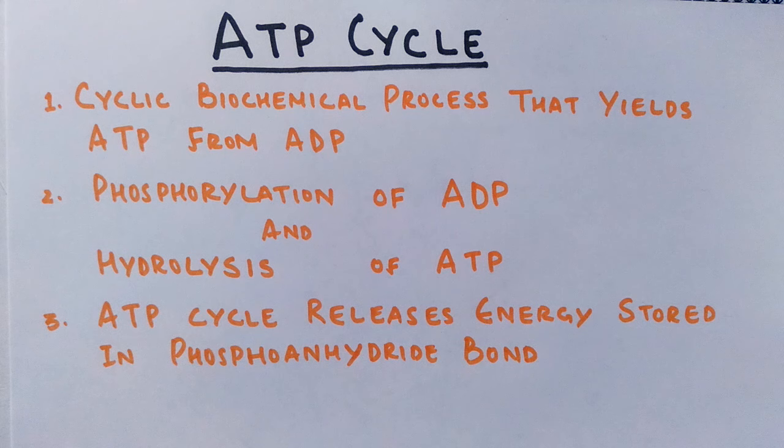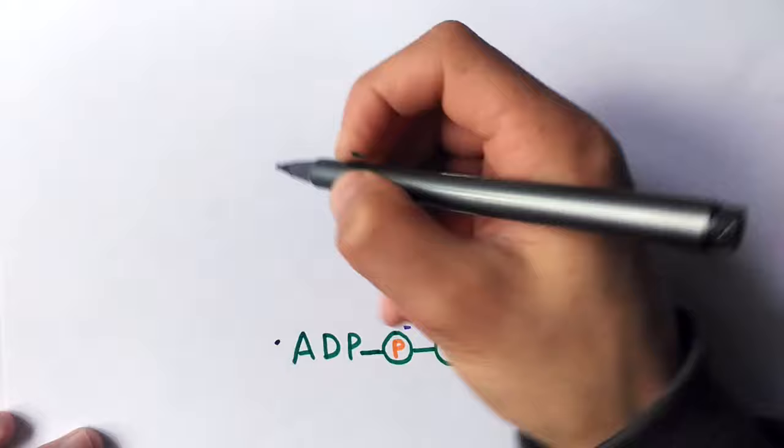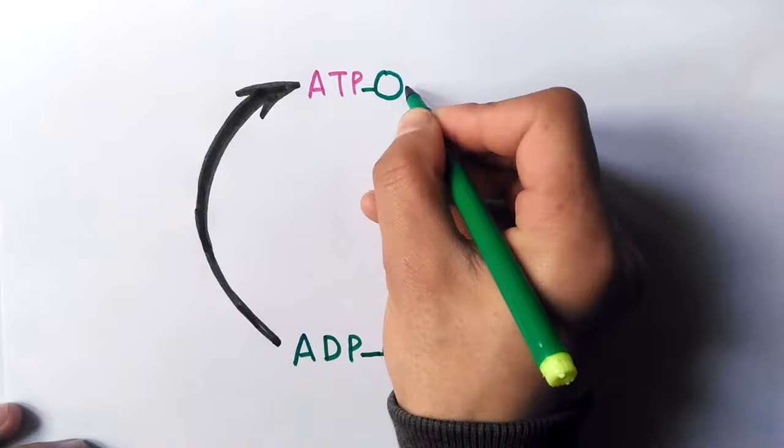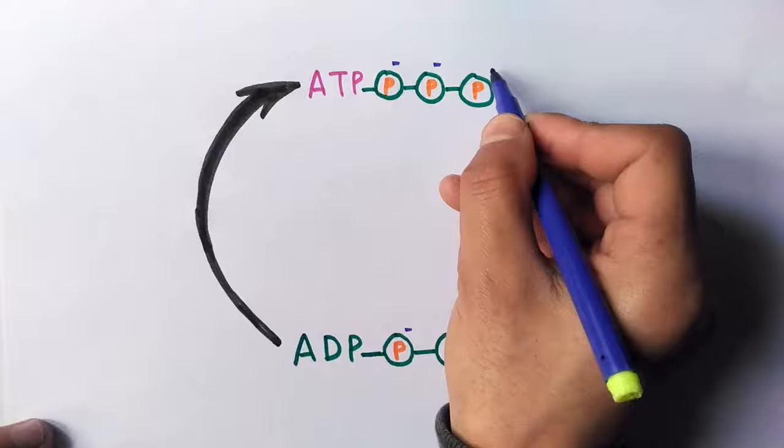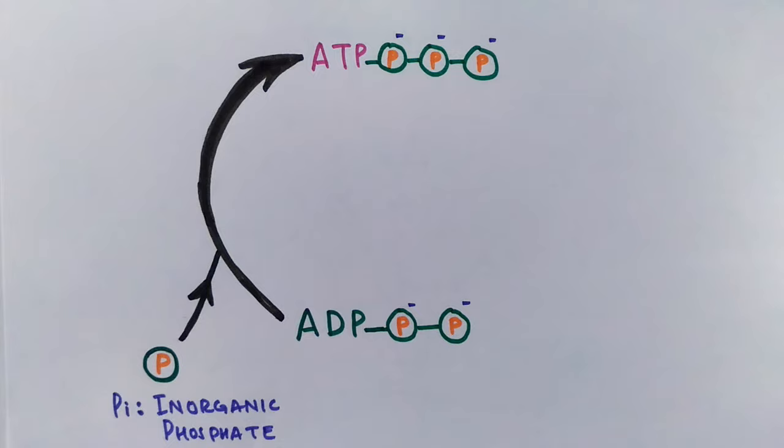Let's see the cycle now. We have an ADP molecule, that's adenosine diphosphate molecule, and we see it has got two phosphates bound to it. And this ADP molecule gets transformed into ATP, that's adenosine triphosphate. So now it has got three phosphates bound to it. That means there is an addition of inorganic phosphate here, which adds to the ADP molecule making it ATP.